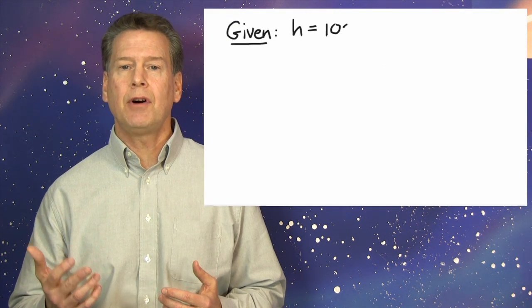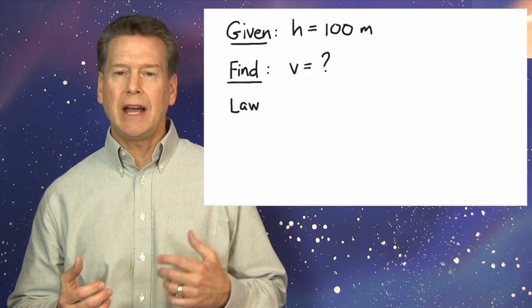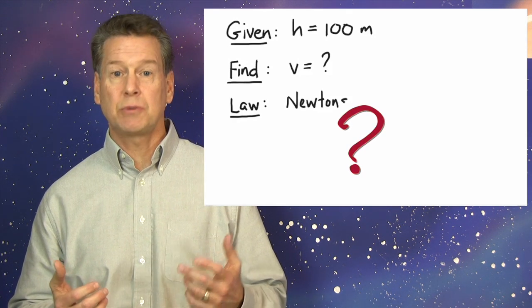So, we are given that the car falls from a height of 100 meters. Here comes the hardest part of solving most physics problems. What law of physics should we apply? What formula involves both fall height, which we're given, and fall speed, which we want to find?